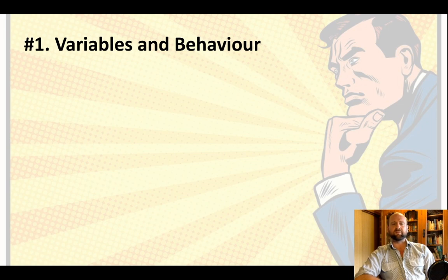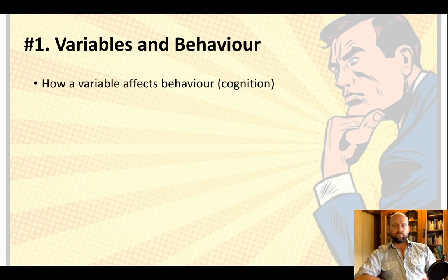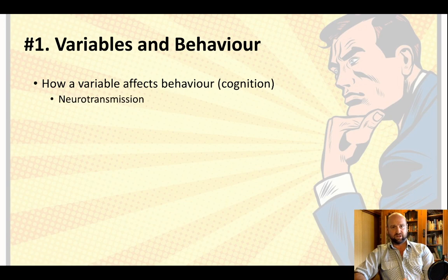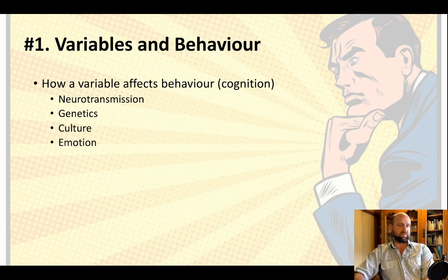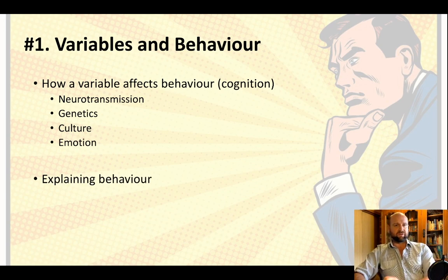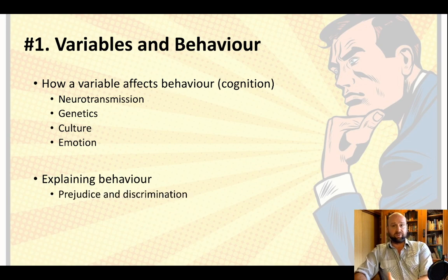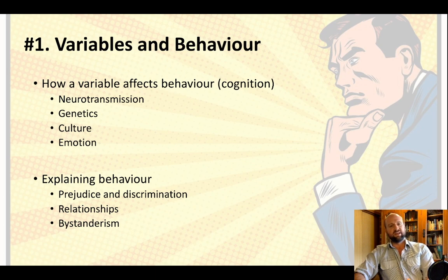So let us look at the first type: variables and behavior. What you are really going to be explaining here is how a variable affects a particular behavior. It could be how a variable affects cognition. So in the biological approach, neurotransmission and genetics. In the sociocultural approach, we are looking at social and cultural factors. In the cognitive approach, there is the example of emotion. The question might instead be focusing on a specific behavior, like prejudice and discrimination — explain why it happens — or relationships, bystandarism, what are the factors that affect these behaviors?